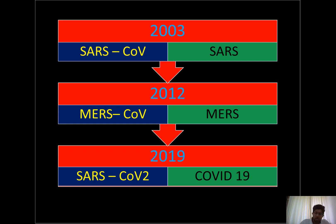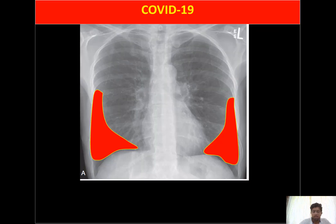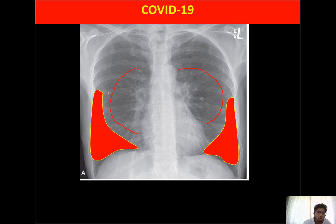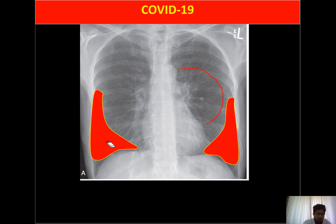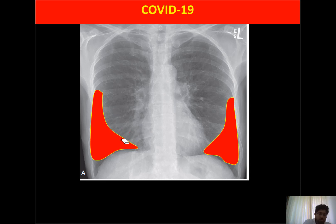The first thing to understand is how COVID-19 appears in the chest. When it infects the lung, it predominantly involves the peripheral aspect rather than the central portion. Central involvement can occur in later stages, but peripheral involvement is most common. It usually involves the lower and mid zones — not the upper half — and is less likely to involve the perihilar region.